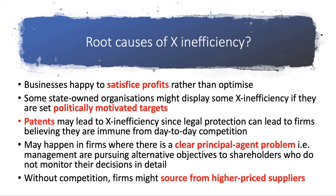We might also see X-inefficiency in markets where there is a clear principal-agent problem. Management may be pursuing their own objectives — different aims to shareholders — who don't necessarily have the time or ability to monitor the decisions that management are taking in their name. Typically, without genuine competition, firms might also be a little more lax when sourcing from higher-price suppliers. Essentially, the absence of the profit motive may take away some of the incentive to control unit costs.